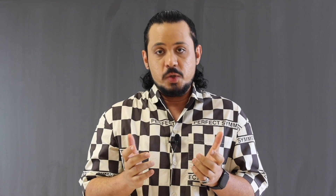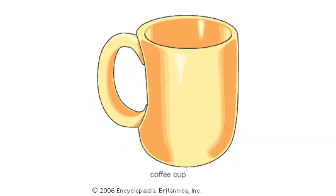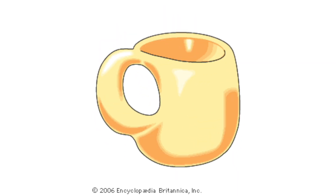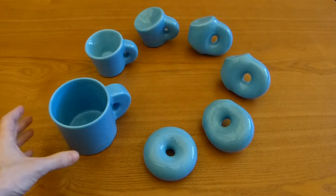Topology is the mathematical study of the properties of an object that are preserved under deformation, twisting and stretching of the objects — but remember, tearing is not allowed. There is a mathematical joke: they ask a mathematician, what is a topologist? And the mathematician answers: a topologist is someone who cannot distinguish between a doughnut and a coffee cup. In summary, the topology of an object specifies how its parts are connected. A doughnut has the same topology as a coffee cup — the hole is equivalent to the handle.